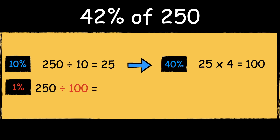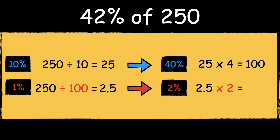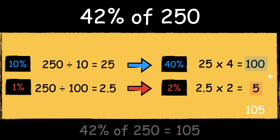Next we find 1% of 250. To find 1% of a number we divide it by 100. 250 divided by 100 is 2.5. We can then multiply the answer by 2 to find 2%. 2.5 times 2 is 5. Now that we have found 40% of 250 and 2% of 250, we add the answers together to get 42%. 100 add 5 is 105, so 42% of 250 is 105.